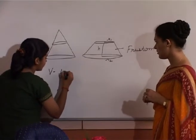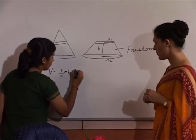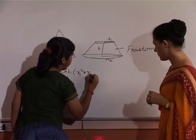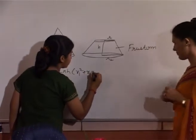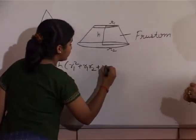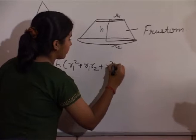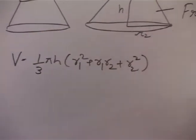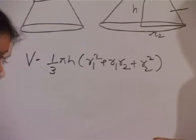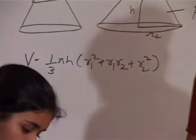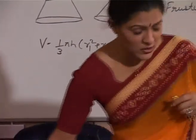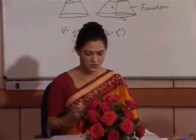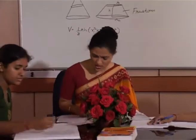The volume is equal to one-third pi h, multiplied by r1 squared, plus r1 into r2, plus r2 squared. Very good, take your seat. I'll remind you once again — it's a very important question, you have to pay attention.